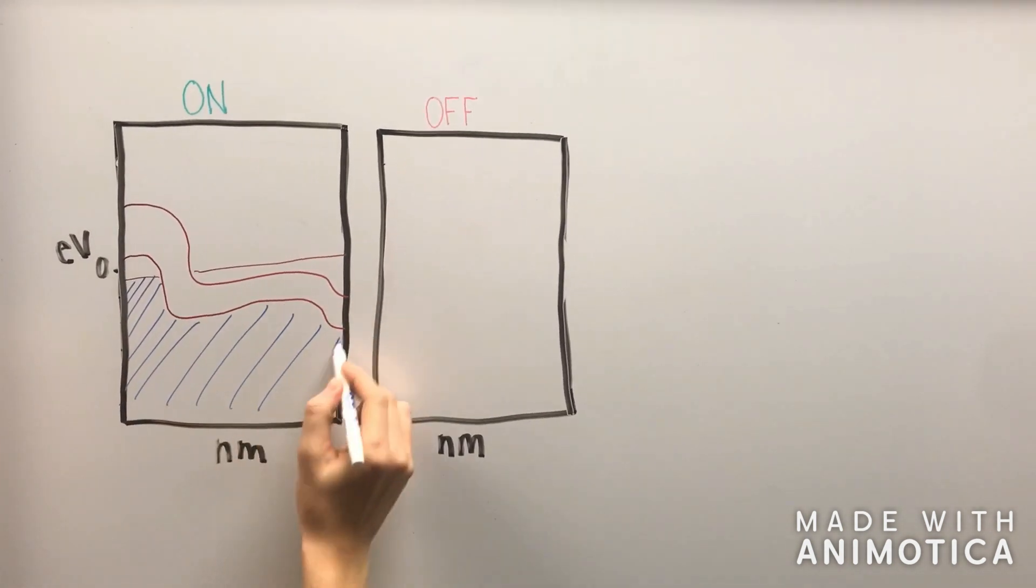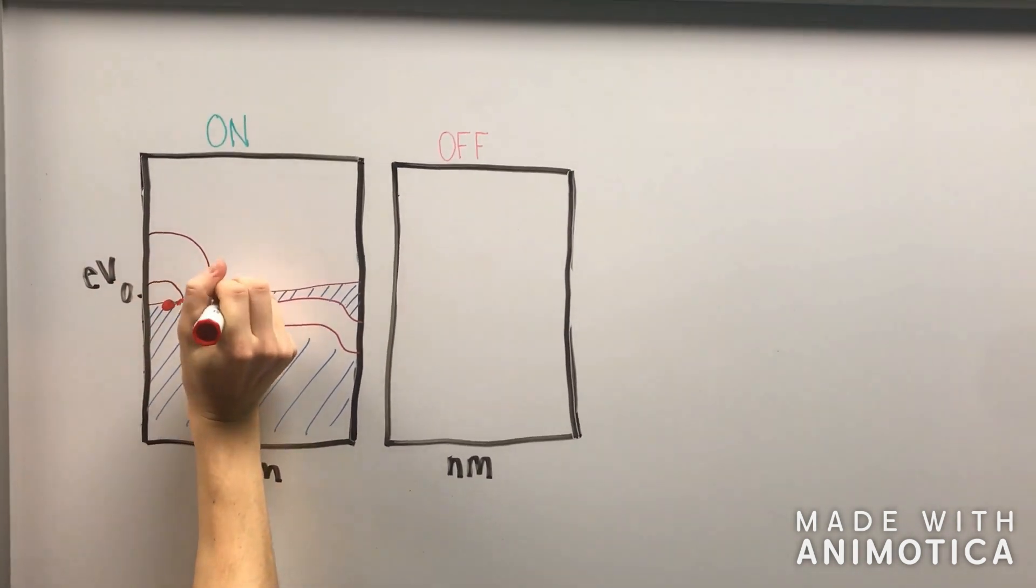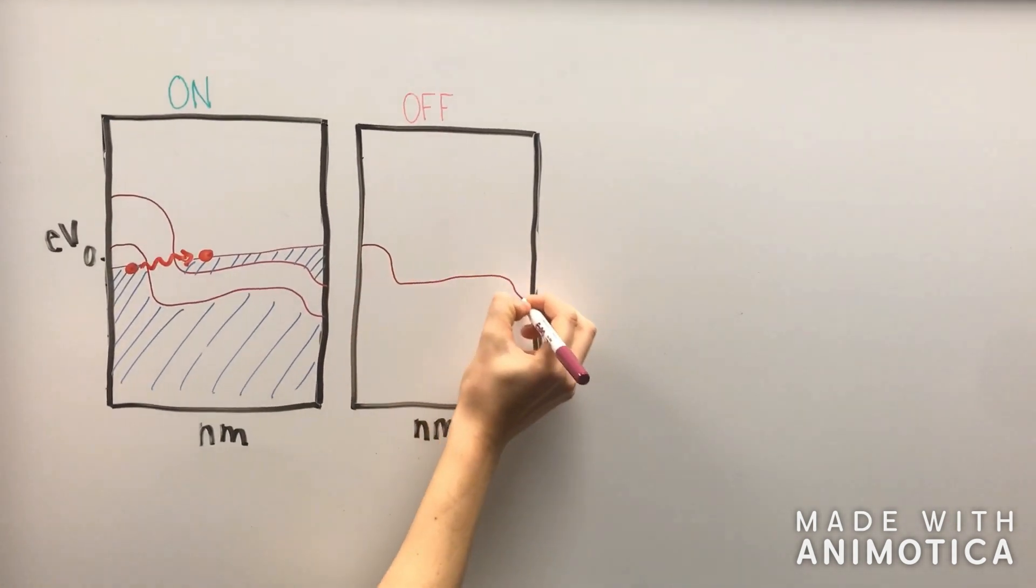When the transistor is on, the band energies overlap, allowing charge carriers to tunnel from the valence band through the band gap to the conduction band.